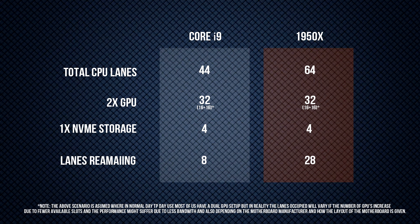The 1950X also features a massive 40MB of cache and a TDP of 180W, along with an unprecedented 64 PCIe Gen 3 lanes — 20 more than what you get on the i9 7900X. So if you have a GPU using 16 PCIe lanes, a dual GPU setup uses 32 lanes, which uses up most of the PCIe lanes on the i9. However, on the AMD Threadripper you're only halfway through, enabling you to connect more PCIe-enabled devices.